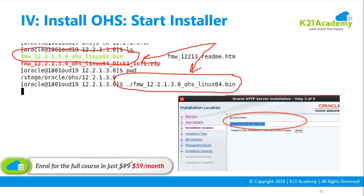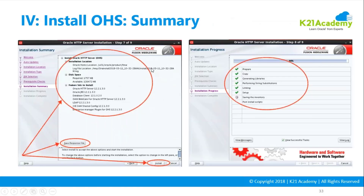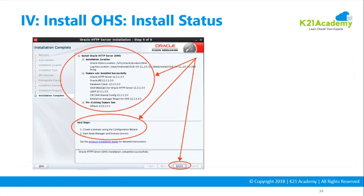The installer will prompt you for an Oracle Home. You install the Oracle Home, and here you won't get an option for co-located mode — you'll only see the option called standalone. Click next and you will install the software, so you'll get Oracle HTTP Server installed.